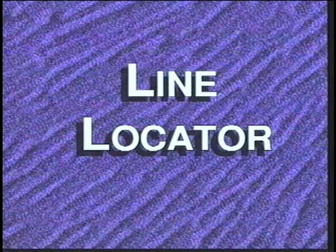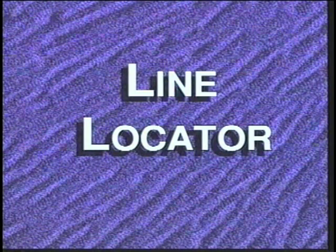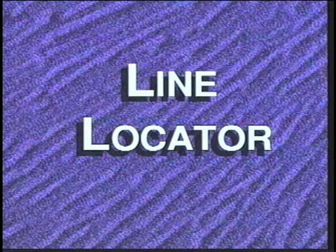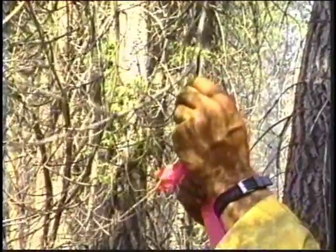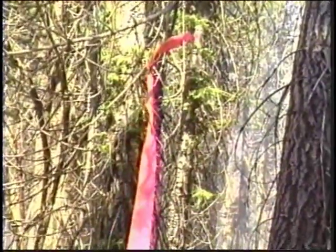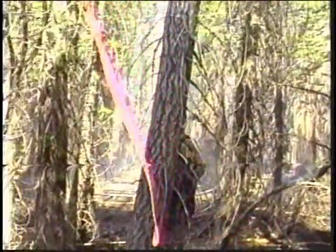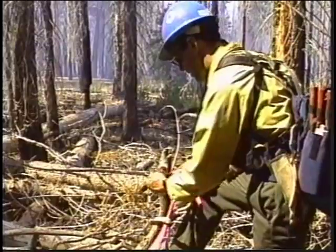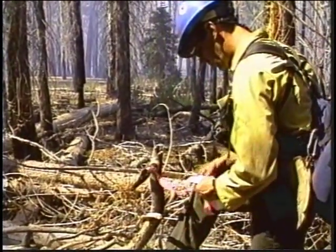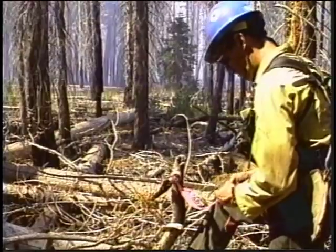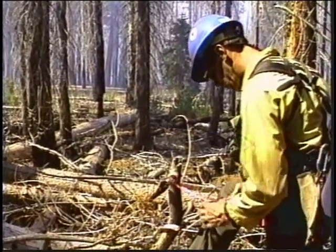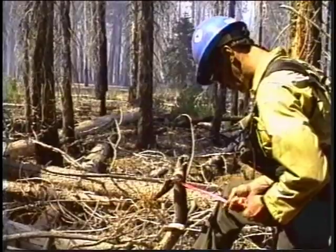Whenever a crew is engaged in line construction actions, the use of a line locator is advisable. The line locator position can be filled by a crew boss, a subordinate of the crew boss, or assigned personnel from outside the crew. The knowledge and experience level of the line locator is determined by the complexity of the assignment and the availability of personnel. Line locators must have a thorough understanding of flagging techniques. The fire suppression tactics reference guide contains a valuable discussion of these techniques and should be reviewed by the crew boss.